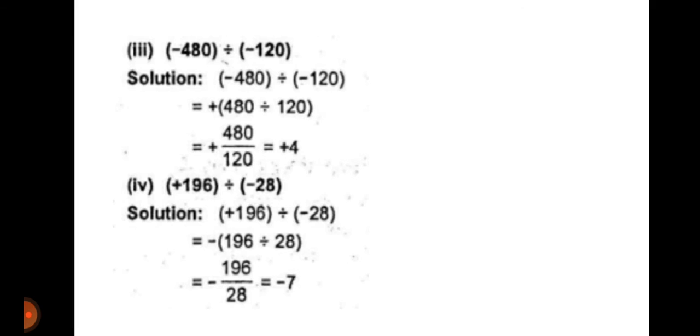Next: minus 196 divided by 28. 28 times 7 gives 196.